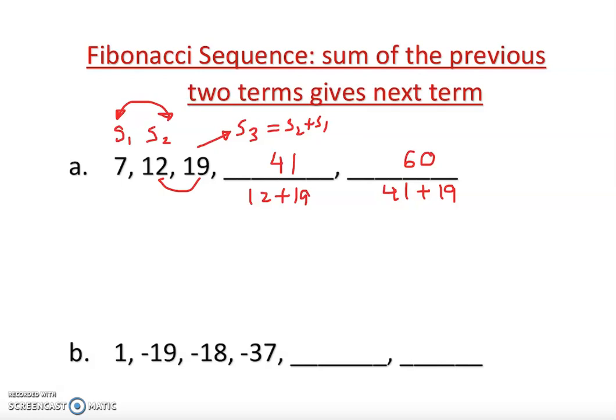So what is the general term? General term is S sub n is equal to S n minus 1. In other words, previous sequence, previous sequence plus the previous sequence, S n minus 2.